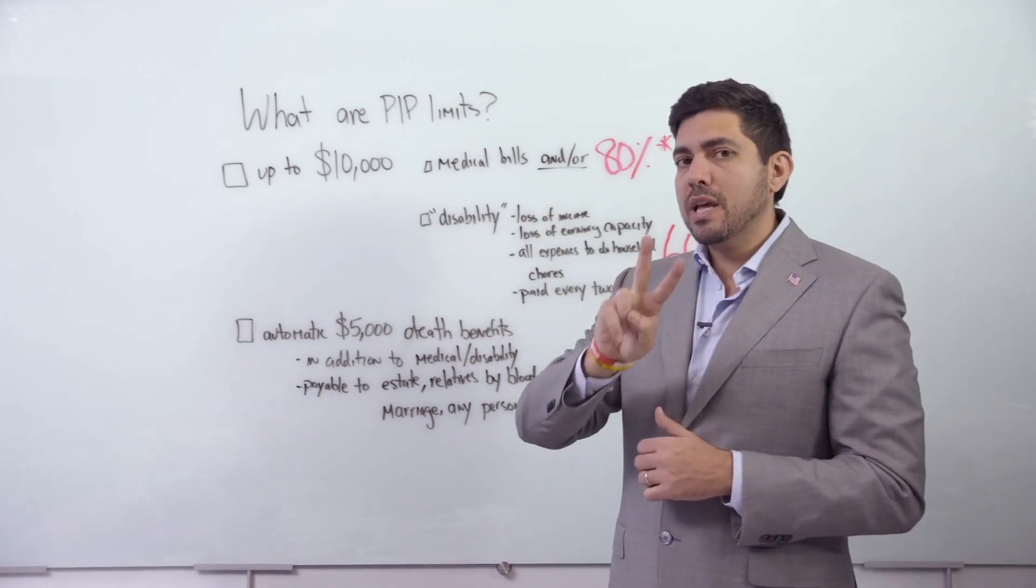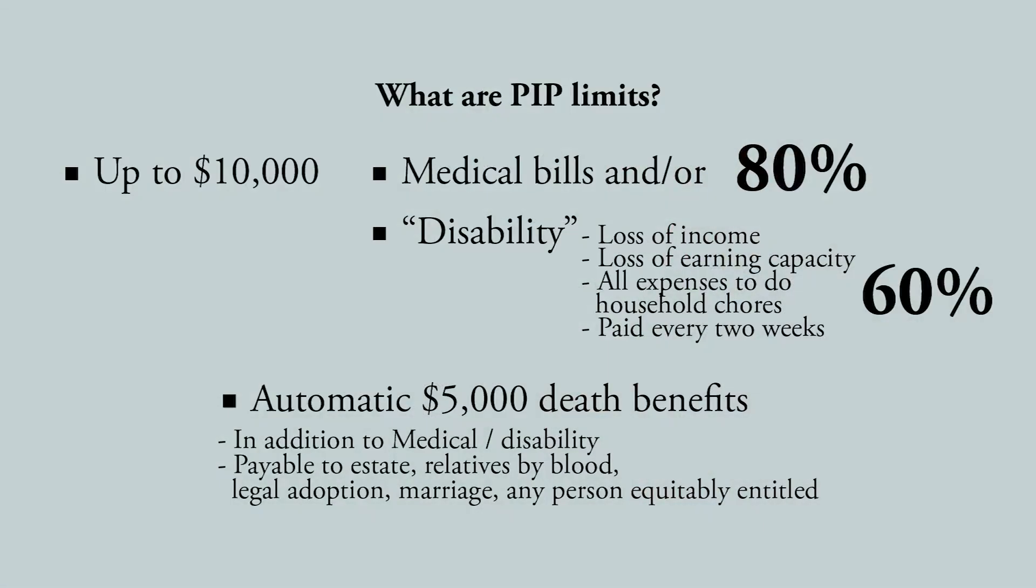There are two sections of PIP limits. The first is up to $10,000 in medical bills and/or disability benefits.